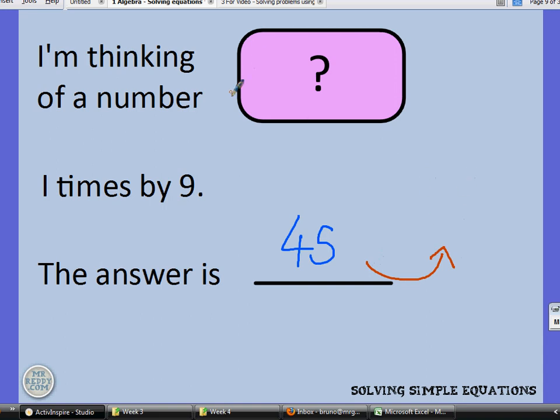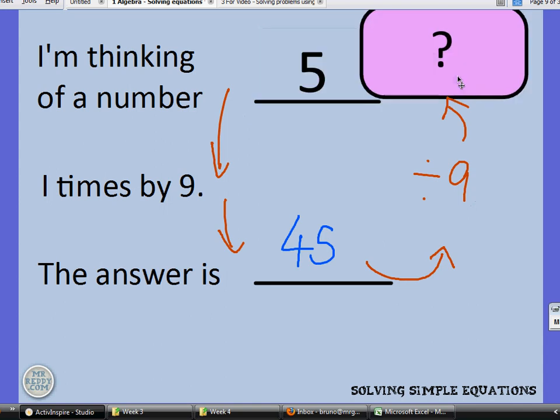So in this direction, we started with a number, times it by 9 and we got 45. But in this direction, we're going to do the opposite. So we'll divide by 9 and get the answer. 45 divided by 9 is 5. There we go. So 5 was the number that I was thinking of. Let's just check. 5 times 9 is 45. Brilliant.